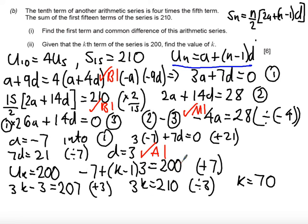Finally there is a method mark given in the last part for substituting in a, d and the value of the term into the nth term and then there is an answer mark if you've worked through it successfully and got an answer of k equals 70. Okay well I hope that all made sense and you was able to follow my solution and that you understood how to mark it.